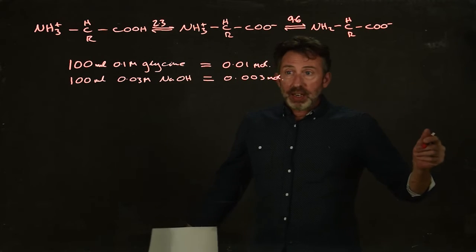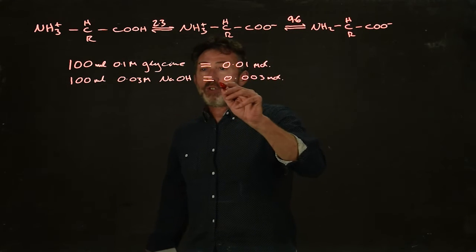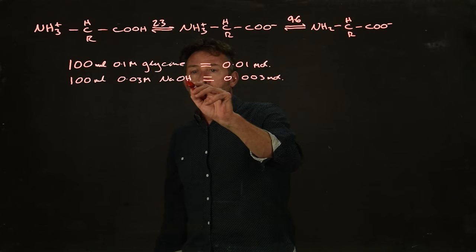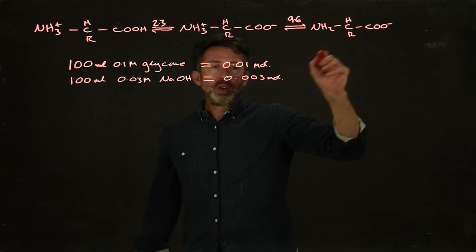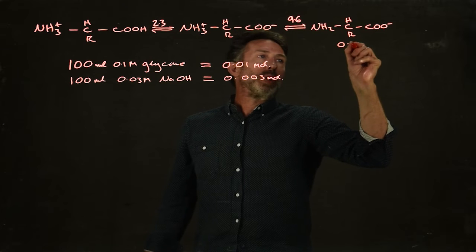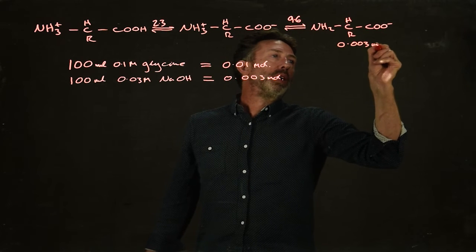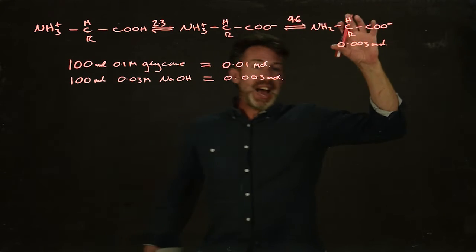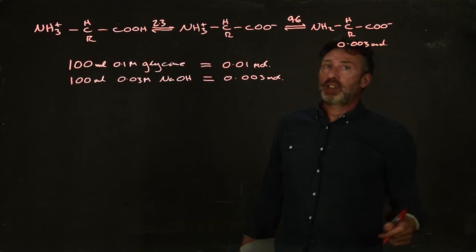How much of it is it going to make? Well, every hydroxide ion is going to remove one proton. So if we've got 0.003 moles of hydroxide ions, we're going to end up with 0.003 moles of the anionic form of the glycine.